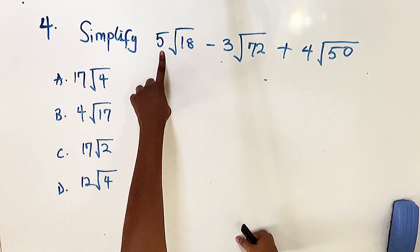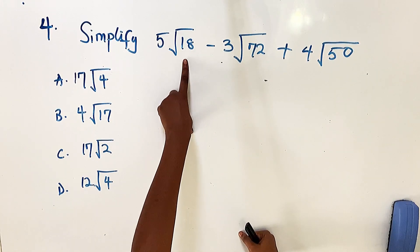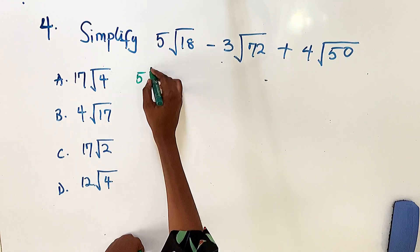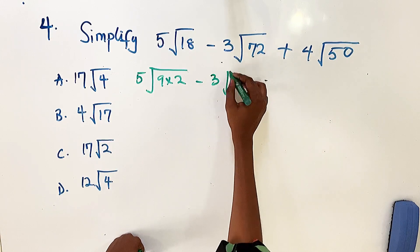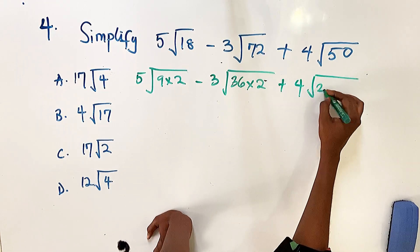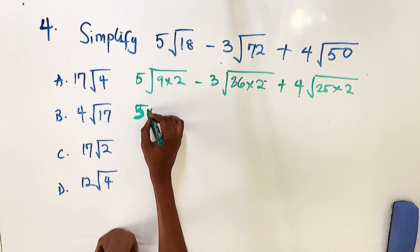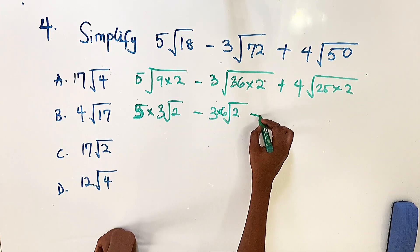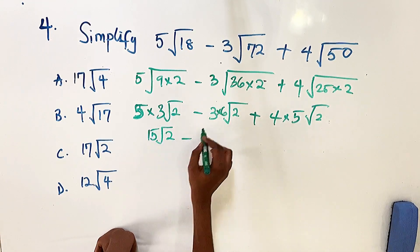Question four: simplify 5 root 18 minus 3 root 72 plus root 50. We break each down: 18 equals 9 times 2, so 5 root 18 equals 5 times 3 root 2, which is 15 root 2. For root 72: 72 equals 36 times 2, so 3 root 72 equals 3 times 6 root 2, which is 18 root 2. For root 50: 50 equals 25 times 2, so root 50 equals 5 root 2, and 4 times 5 gives 20 root 2.